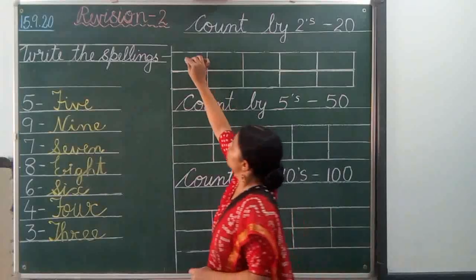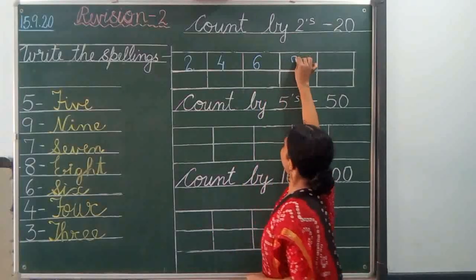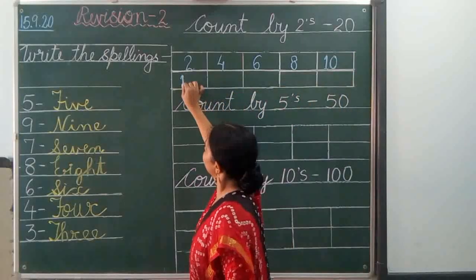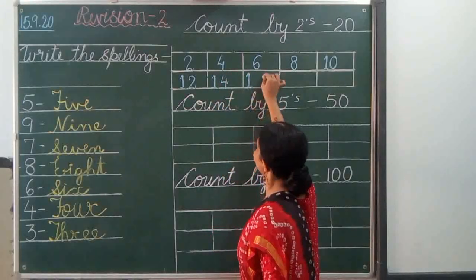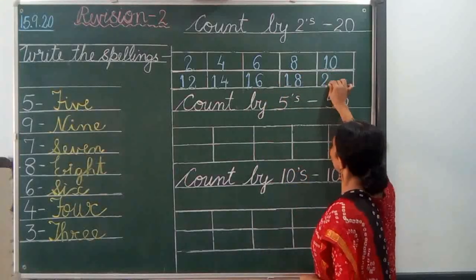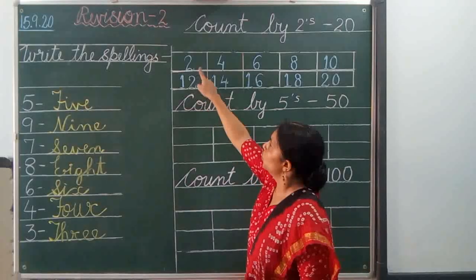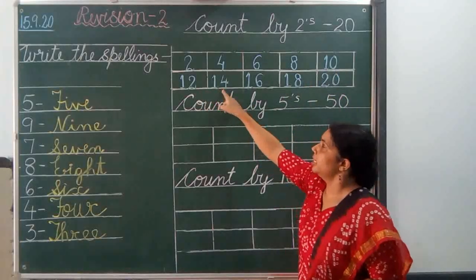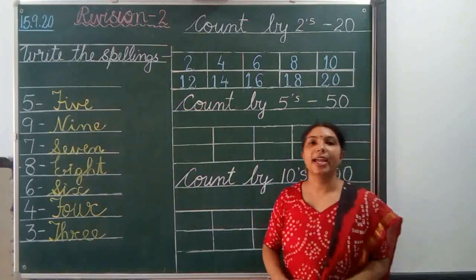Let's start: 2, 4, 6, 8, 10, 12, 14, 16, 18 and last is 20. It is count by 2's 20. Let's revise it: 2, 4, 6, 8, 10, 12, 14, 16, 18 and 20. This is called count by 2's 20.